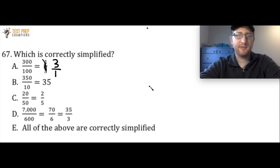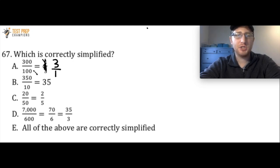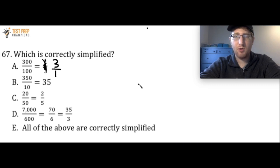Which is correctly simplified? A, B, C, D, or E. Note that A says 300 divided by 100 equals 3 over 1 — I had a typo there which I crossed out. So A should say 300 divided by 100 equals 3 over 1. Let me give you a chance to pause the video, try to figure this out, and then when you're ready we'll go over how to do it.